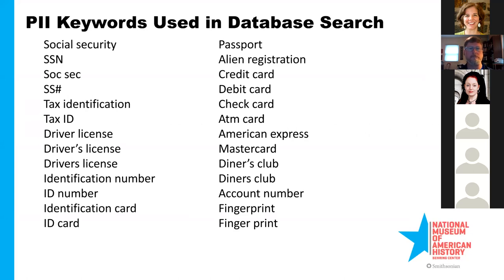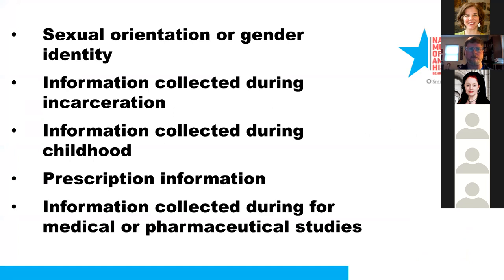The museum also went beyond PII and broadened the net, particularly with images. We reviewed records for sources that may have had no voice in the decision to donate — for instance, records containing information about sexual orientation or gender identity of someone who may not be publicly out, information collected about a person while they were incarcerated, private or sensitive information about a still-living person collected when they were a minor — especially images of children — and prescription information and images exposing individuals within medical or pharmaceutical studies. In most cases, this did not mean keeping records off the web completely. Instead, we withheld certain images and redacted our transcriptions of sensitive information found on the object.